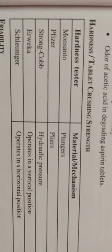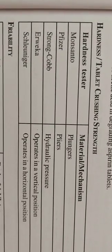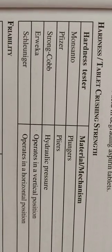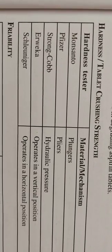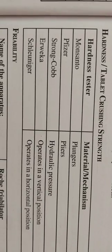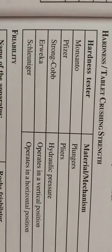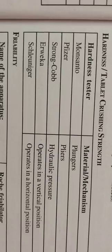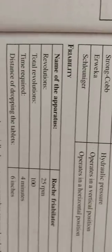To summarize the mechanisms: Monsanto acts on the plunger, Pfizer acts on the plier, Strong Cobb uses hydraulic pressure, Arbeca operates in a vertical position, and Schleuniger acts in the opposite manner — that is, the horizontal position.